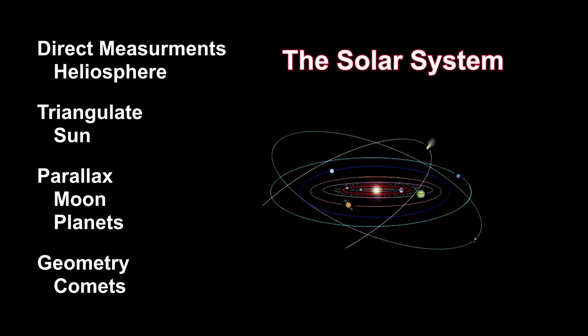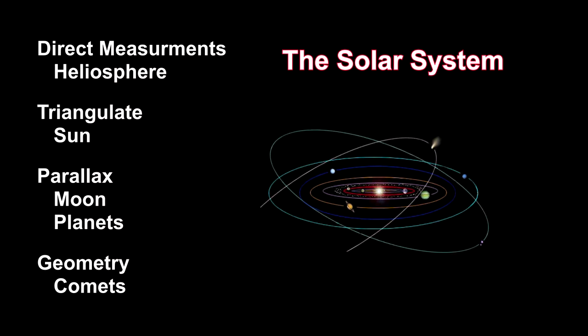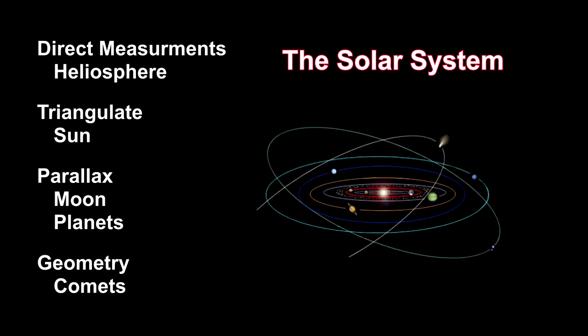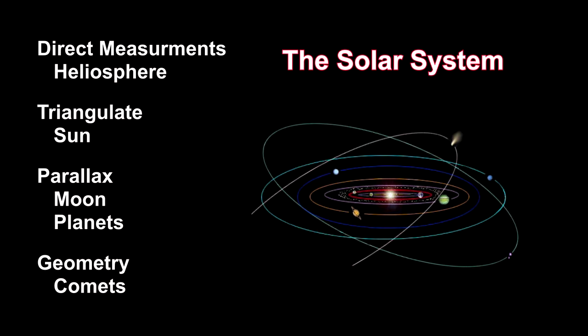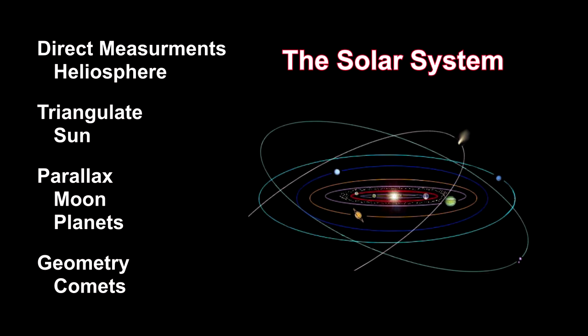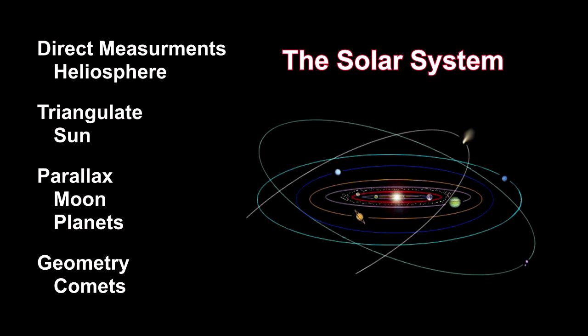In the next chapter, we'll use parallax to measure how far away the moon and planets are and triangulate the distance to the sun. We'll take the direct method to measure the extent of the sun's heliosphere, and we'll use geometry to determine how far away comets are.